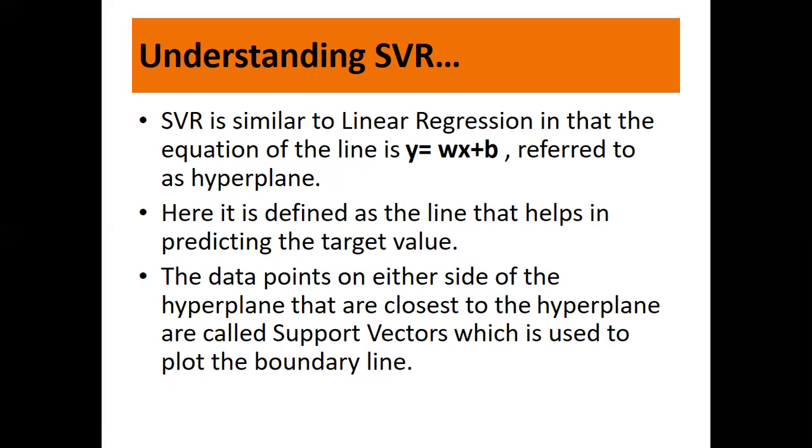The best fit line is the hyperplane that has maximum number of points. Decision boundary lines are at distance epsilon from the hyperplane, defined as a line that helps in predicting the target value. Data points on either side of the hyperplane closest to it are called support vectors, which are used to plot the boundary line.